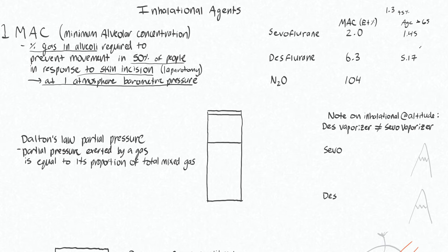The general rule is that MAC decreases by about 6% per decade of life over 20 years old. By age 65 that is roughly four and a half decades, so four and a half times 6% gives about a 25% decrease in MAC — which is basically what we see: a reduction from 2% sevoflurane down to 1.45% in a young adult versus a 65-year-old.